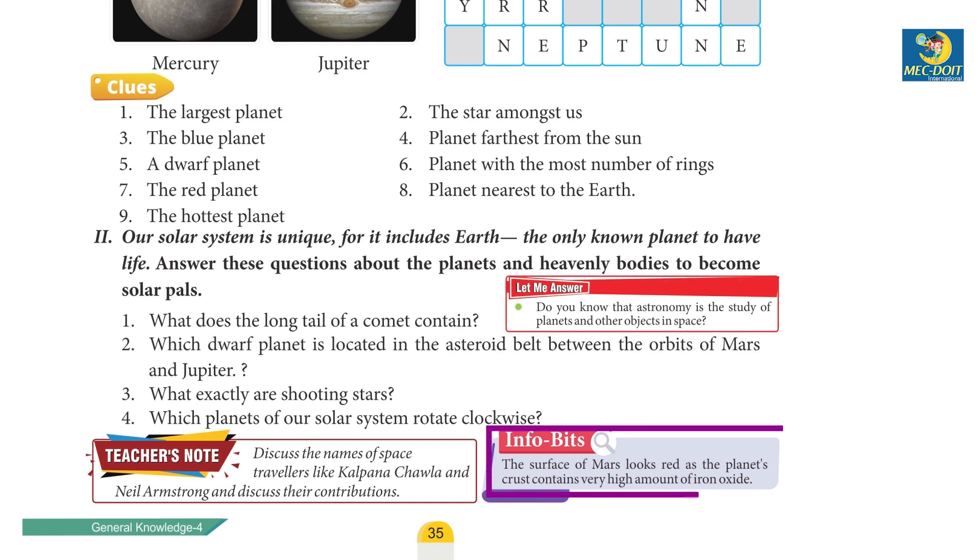Info bits: The surface of Mars looks red as the planet's crust contains a very high amount of iron oxide. Teacher's note: Discuss the names of space travelers like Kalpana Chawla and Neil Armstrong and their contributions.